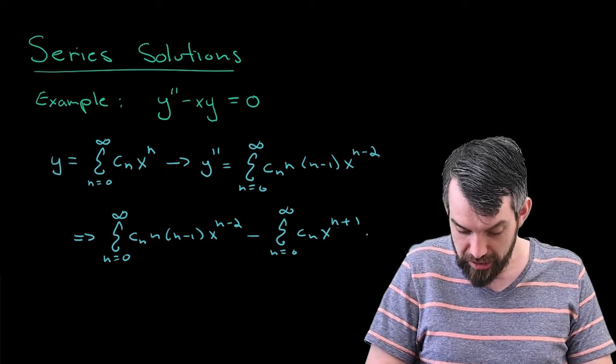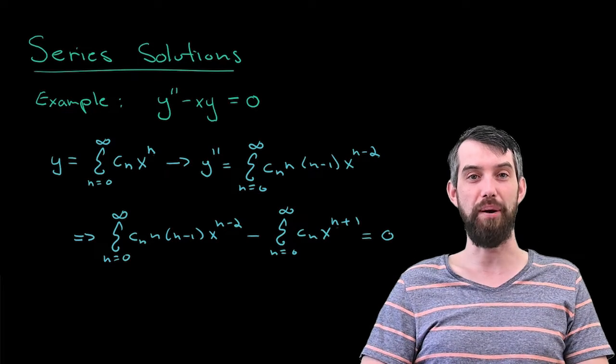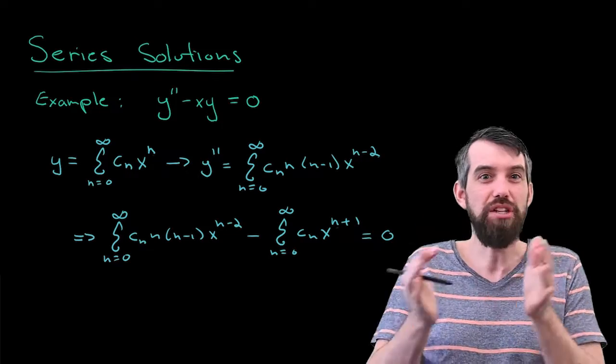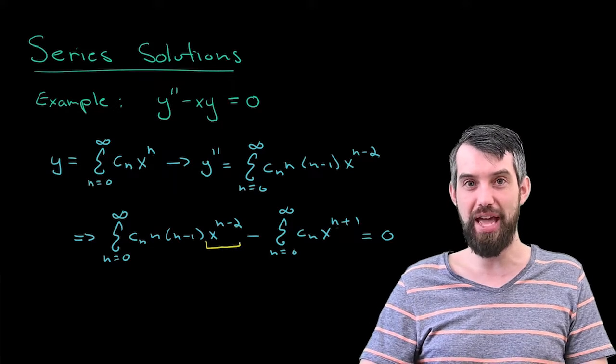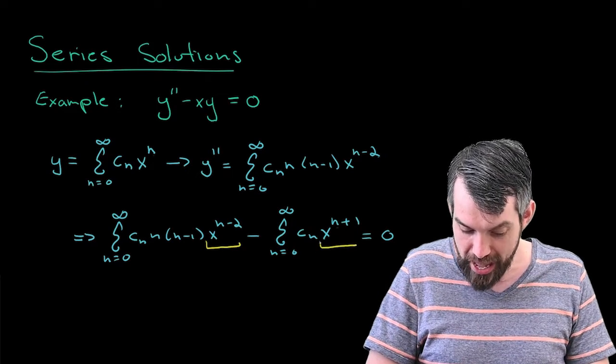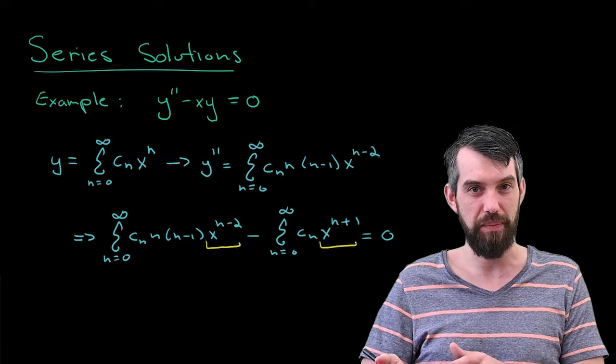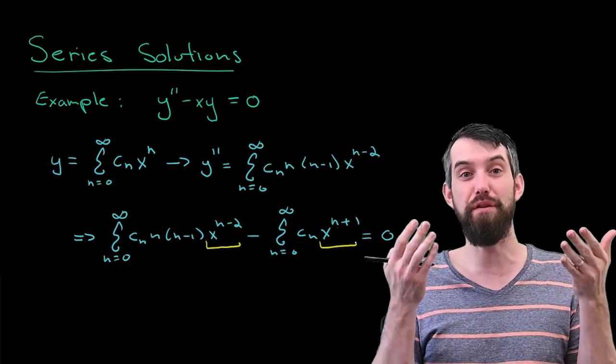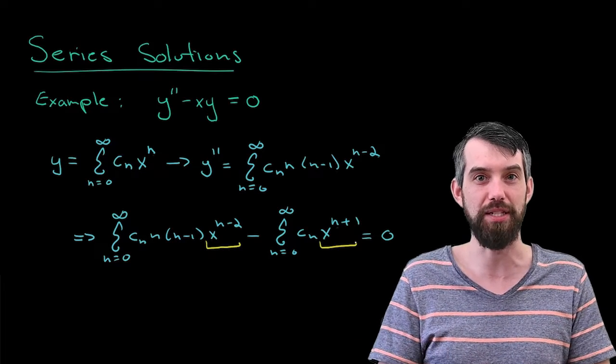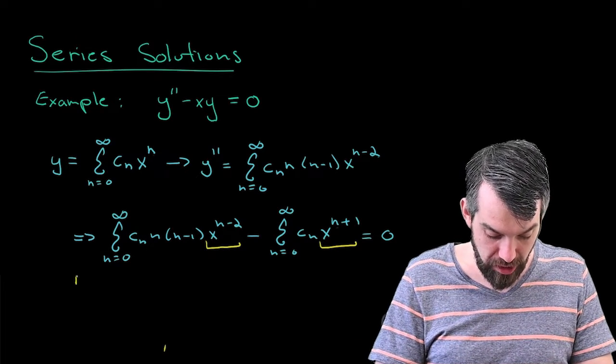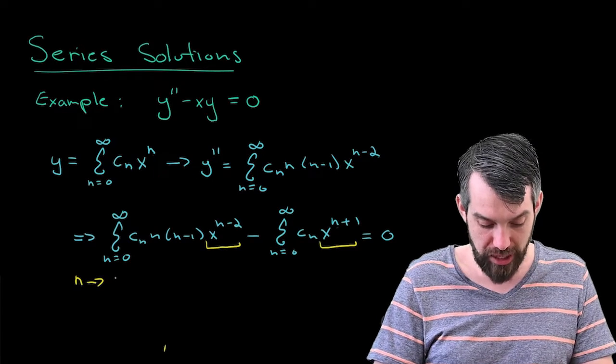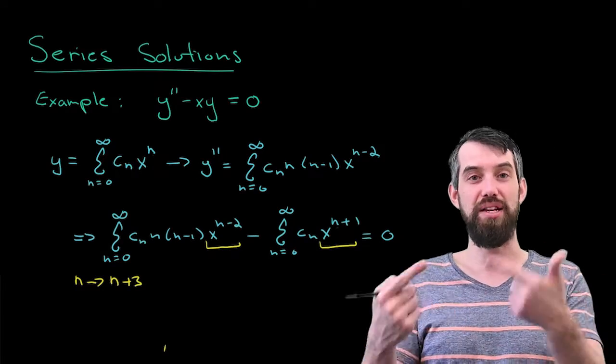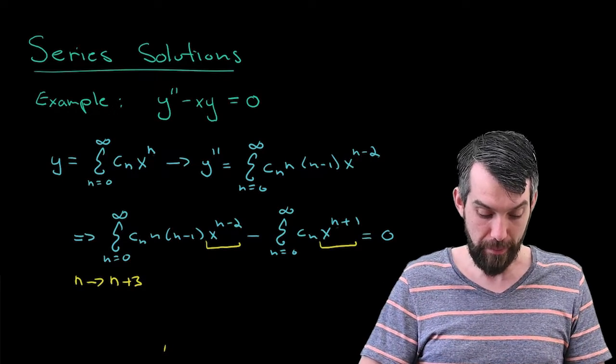So taking the y and the y double prime, plugging both of those into the differential equation. That's going to leave me with, well, for y double prime, I'm just going to copy and paste. n equal to zero to infinity, the c_n, the n, the n minus 1, and the x to the n minus 2. But then I need to subtract off x times y. So what I'm going to do is put in the y, but I need to add one more x. So I'll take the sum from n equal to zero up to infinity of c_n, and then it should be x to the n, except for the fact that there's one more x. And that's what I actually write is x to the n plus 1. So that's representing the single x that I have out the front, as well as the n that I have here, that together comes and gives me the n plus 1.